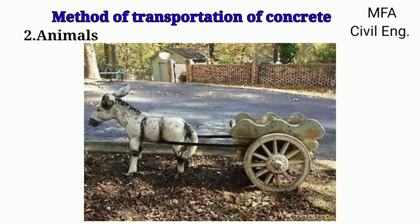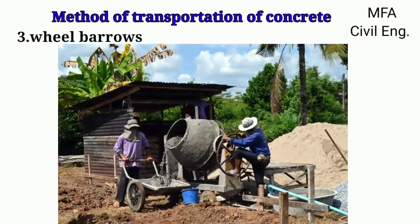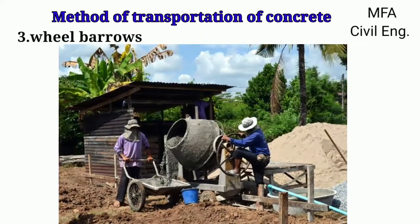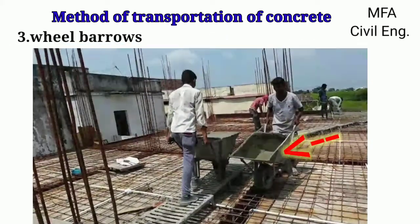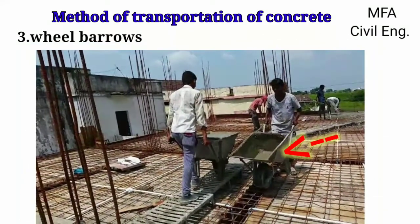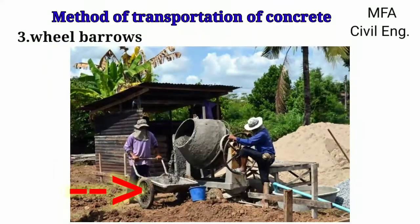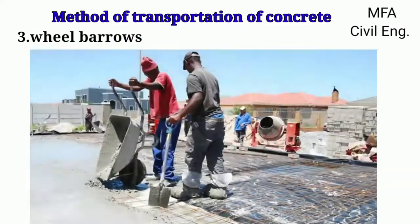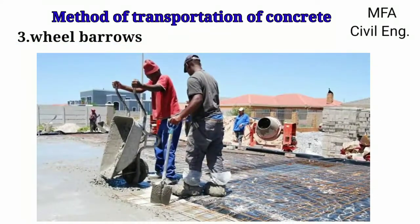In the animal method, concrete is often transported on the back of mules where the distance is large. In the wheelbarrows method, concrete is transported in a tipping type of wheelbarrow or hand cart which can be tilted to empty them.